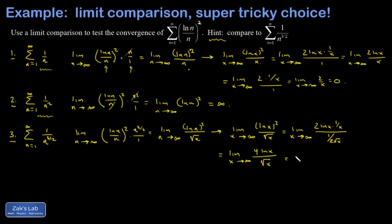And that's an infinity over infinity indeterminate form. So I have to differentiate again using L'Hopital's rule. This gives me four over x in the numerator and again, one over two root x in the denominator. And I multiply by the reciprocal of the denominator and I end up with eight root x over x.